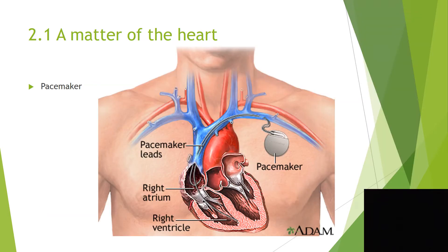The beat of your heart is controlled by the pacemaker, a bundle of nerves on your heart that connects to your brain. This helps to control how fast the heart should beat. If your cells need more oxygen, your heart will beat faster to bring more blood to your cells.